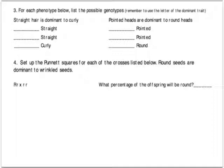We're moving to the next slide. I'm skipping through some problems so you can try them yourself. Problem three: for each phenotype — what you see — list the possible genotypes, the letters. Remember to use the letter of the dominant trait if they're expressing the dominant trait. Straight hair is dominant to curly.